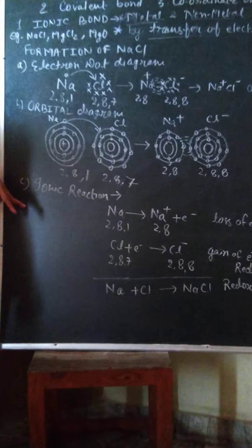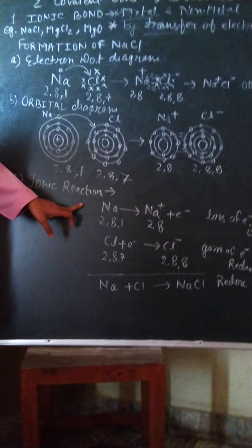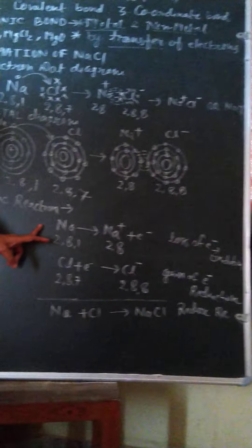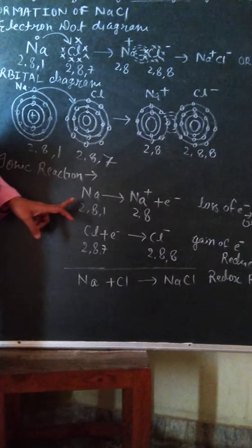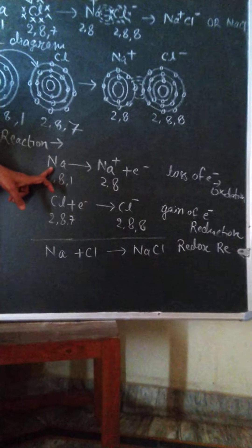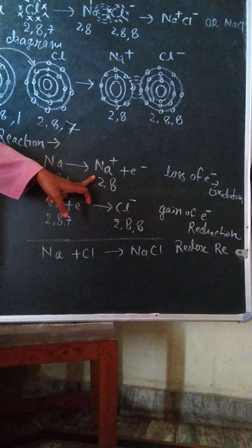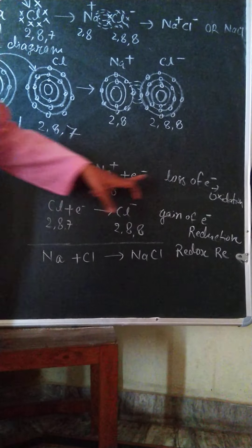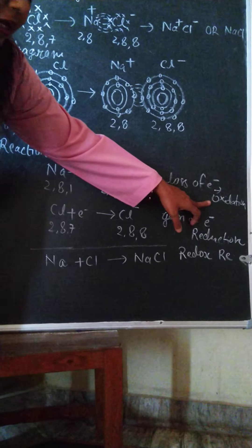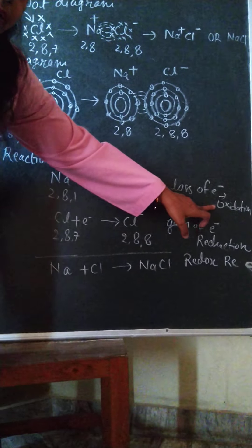The third heading for the formation of NaCl is ionic reaction. We have to show the formation of sodium chloride by ionic reaction. As you know, metal always loses electrons. Sodium is a metal which loses its one valence electron to form a cation. Loss of electron is called oxidation — this is a new term you have to remember.